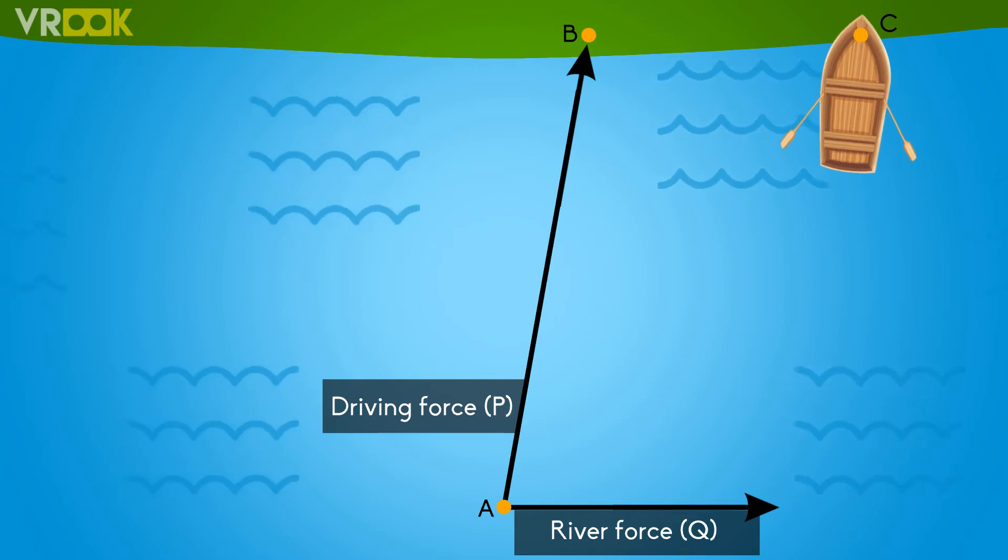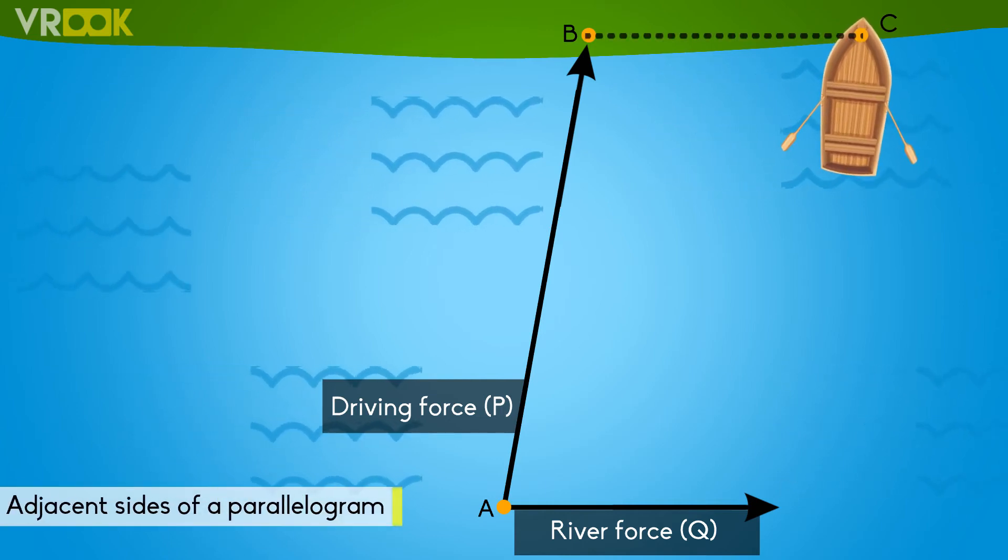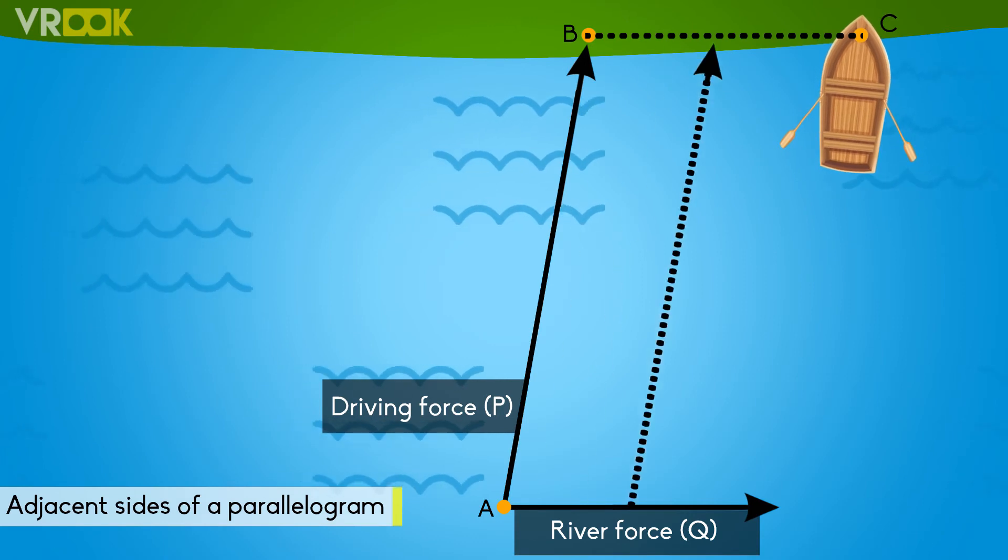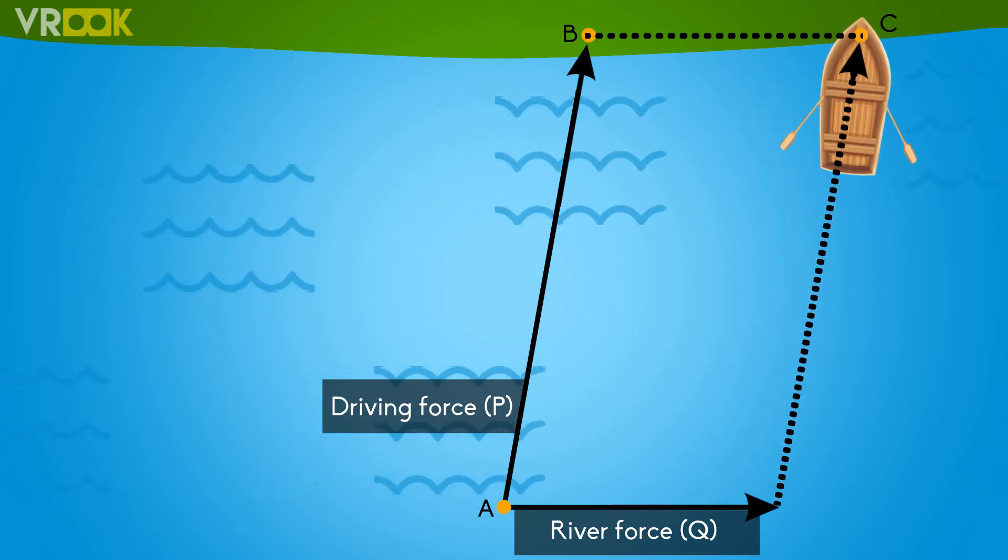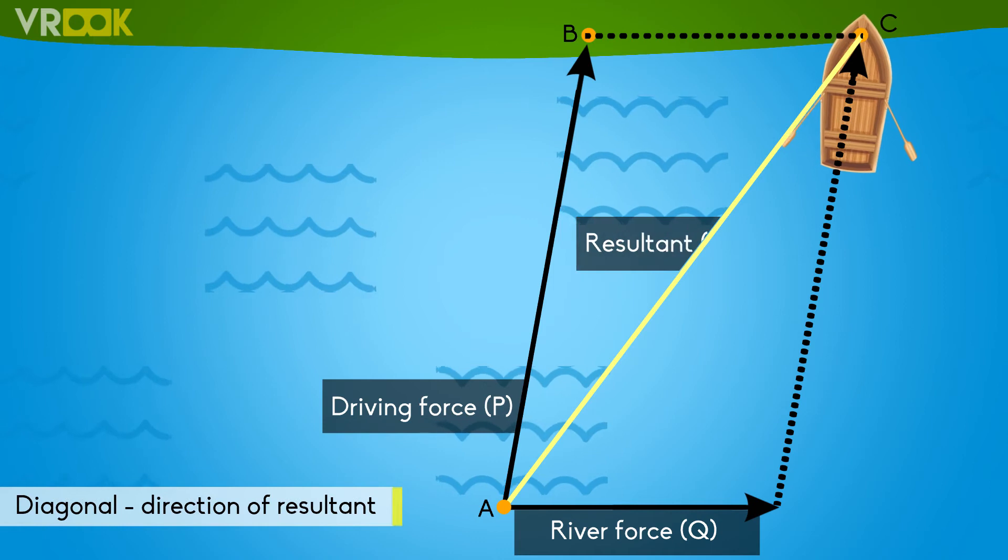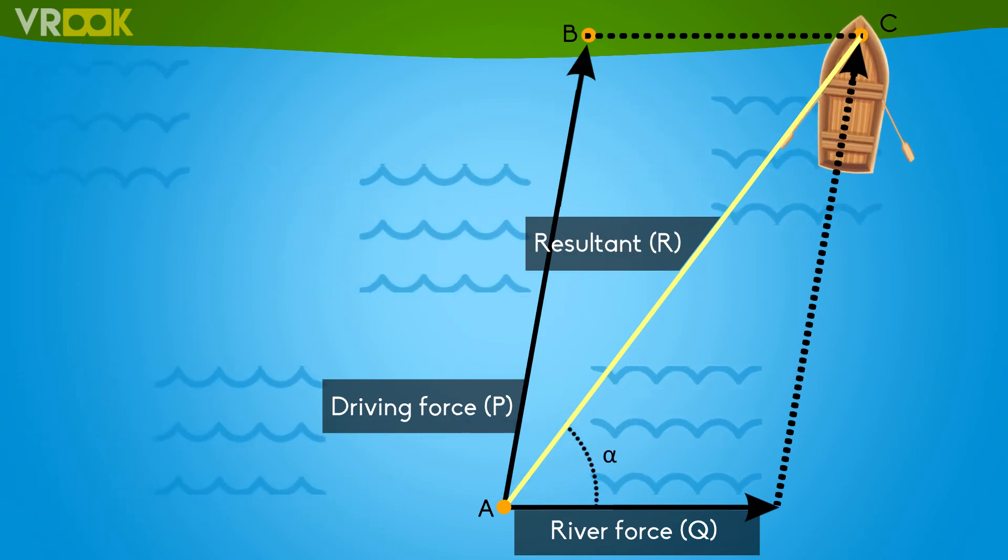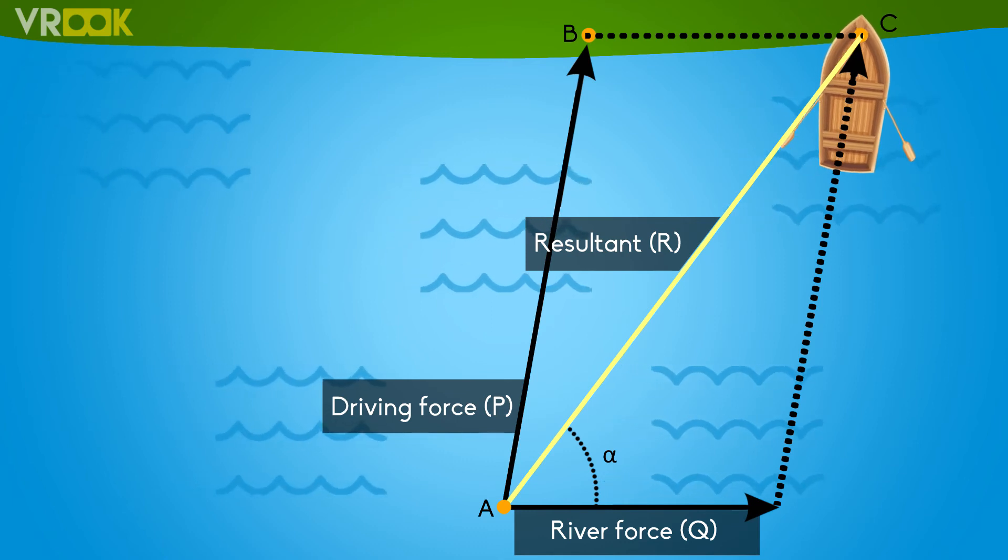Then parallelogram law tells us that if we take these force vectors as adjacent sides of a parallelogram and complete the parallelogram, then the diagonal will give the direction of resultant. The same thing has happened here. Combined effect of both the forces made the boat to reach point C.